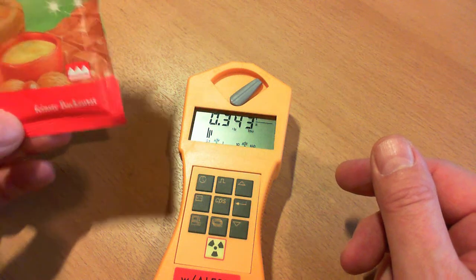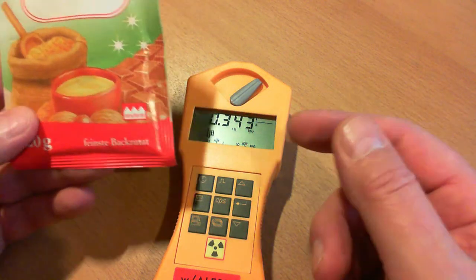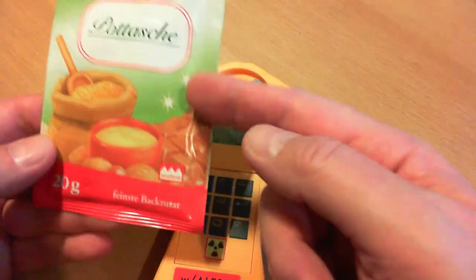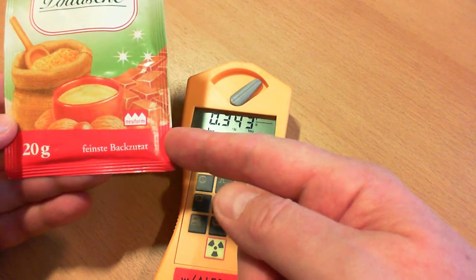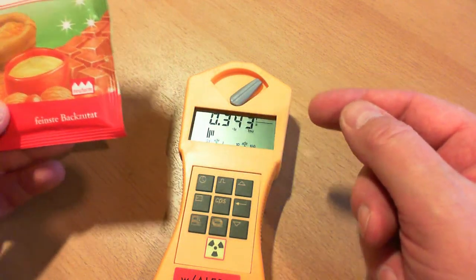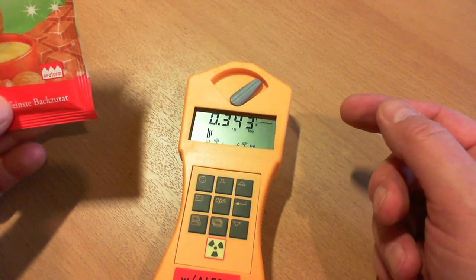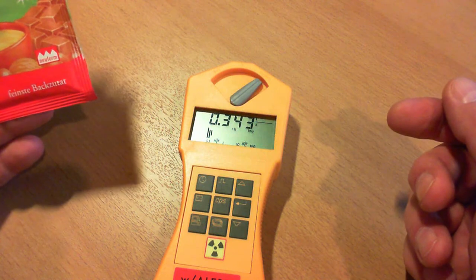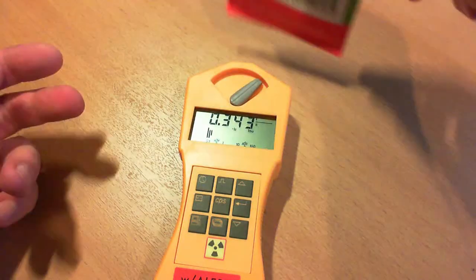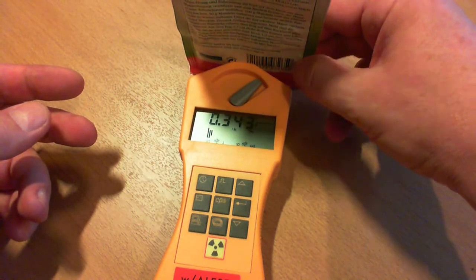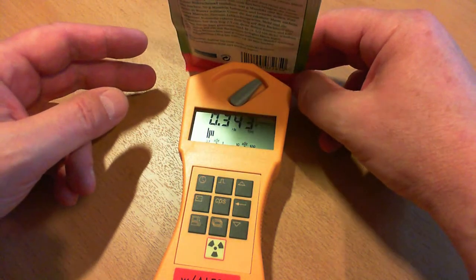And potassium is a beta emitter. In health food stores you get these as self-raising baking powders, and with this you can examine the function of a counter when it is beta sensitive.